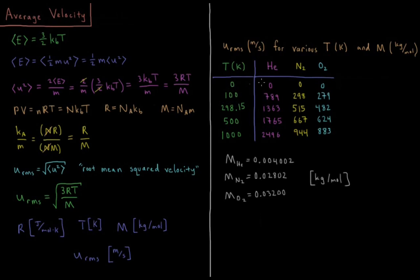At absolute zero, as you might expect, there is no kinetic energy and no velocity of anything. No thermal energy, no kinetic energy at zero Kelvin. But notice that even at fairly modest temperatures, we have velocities for these gas particles that are in hundreds of meters per second.